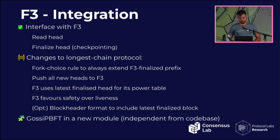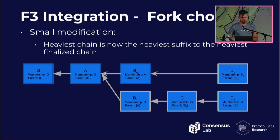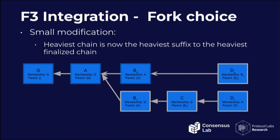Some changes we do make: we create a new finalize function rather than reusing checkpointing, and we change the fork choice rule to always select the heavier suffix of the finalized chain. We push heads to F3 rather than polling. The fork choice rule change means: the heaviest chain is no longer the one with the most weight overall, but the suffix with the most weight from the heaviest finalized prefix. For example, if block B0 was finalized, the fork choice selects the heaviest suffix from B0 onward — not the previously heaviest overall chain ending at D1.